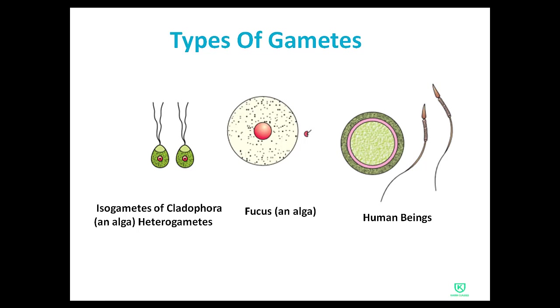In humans, the male gametes are sperm, which are long and slender. The circular ovum or egg cell is the female gamete.